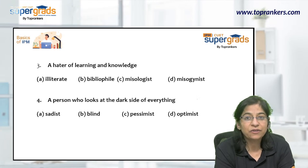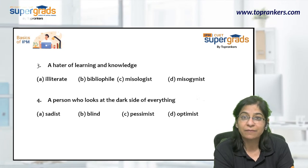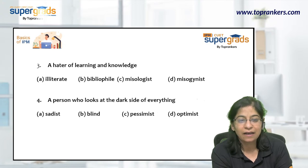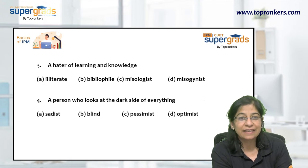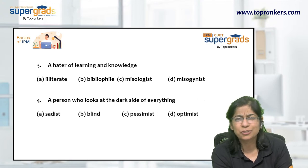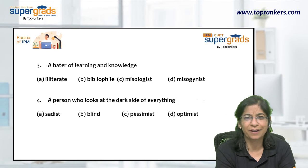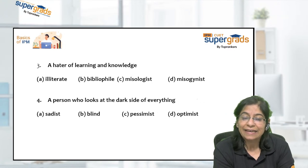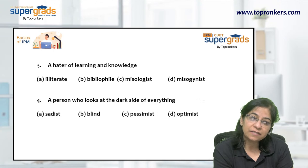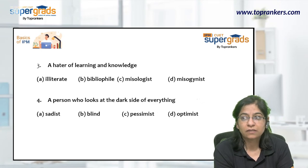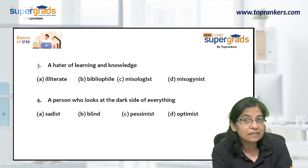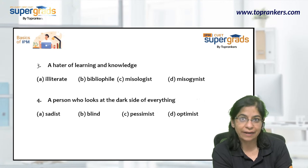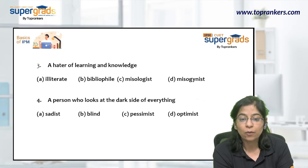The next one: 'A hater of learning and knowledge' — someone who has a hatred for knowledge or learning. The answer is definitely not 'student.' Illiterate refers to someone who doesn't know the alphabet, someone who cannot read or write.